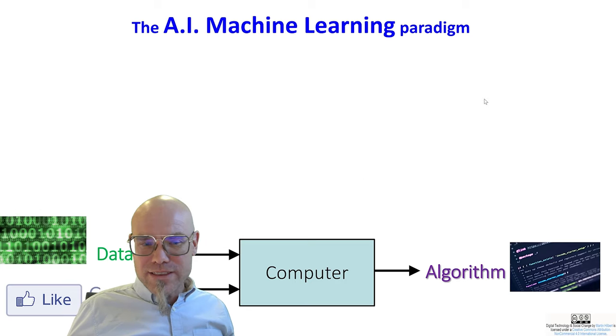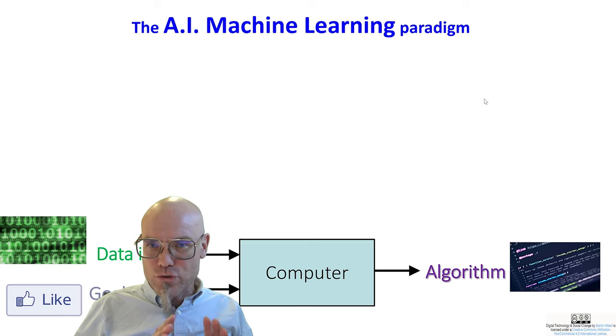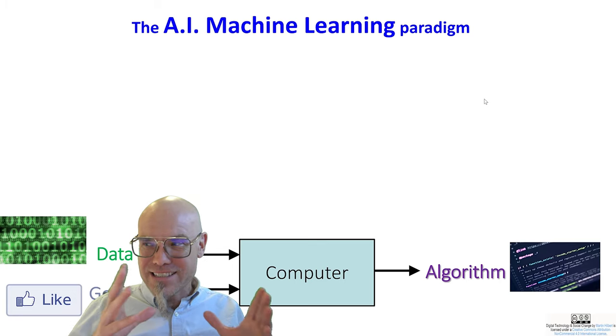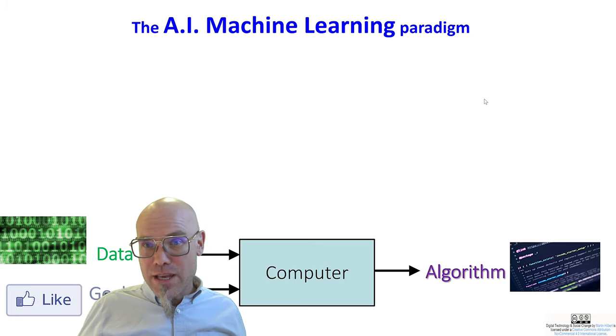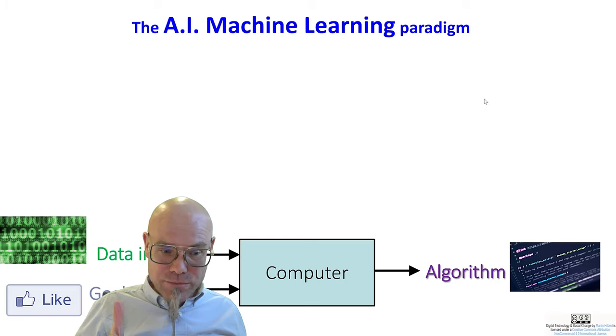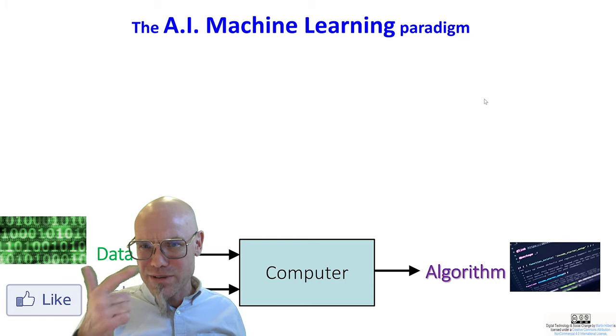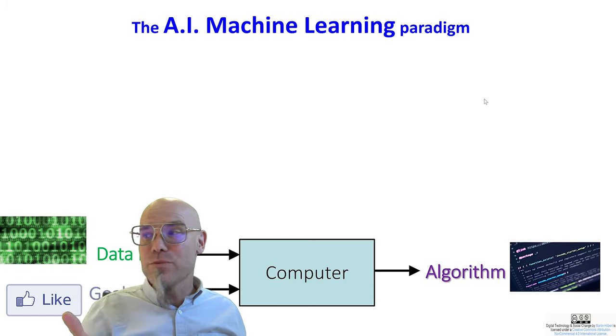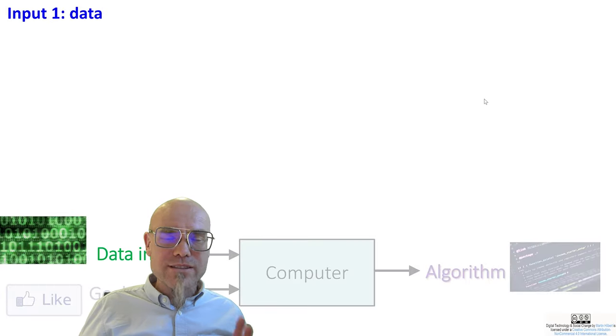Before we go in there, let's go step by step through this paradigm, the machine learning paradigm, the master algorithm paradigm. We have these three parts. We have data input. We have goals, which actually becomes an input now. And we have the algorithm. So let's start with data.